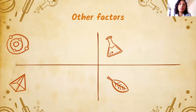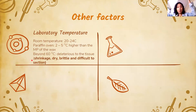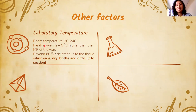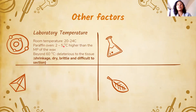Factors that affect embedding: laboratory temperature should be at room temperature. The paraffin oven temperature is very crucial. You must follow the manufacturer's recommended melting point. Usually the paraffin oven is set 2 to 5 degrees Celsius higher than the melting point of the wax. If the melting point is 56°C, set the oven to 58–61°C. Do not exceed the manufacturer's recommendation significantly.